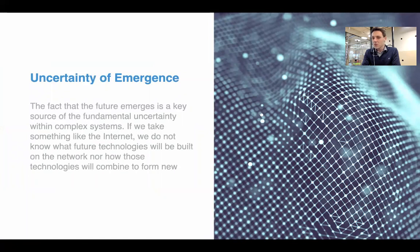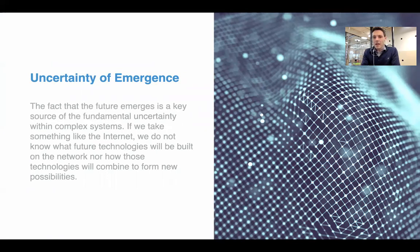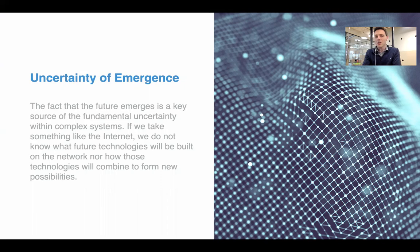Key features of emergence: it is a different concept to self-organization, and it's about how the future unfolds, with high levels of uncertainty in that. We can't predict or plan really what's going to happen. The fact that the future emerges is a key source of the fundamental uncertainty within complex systems.